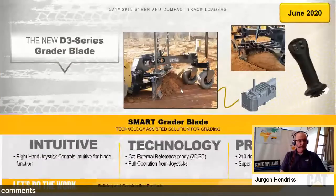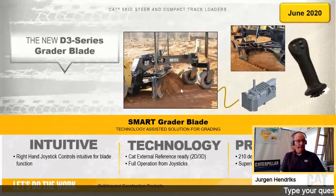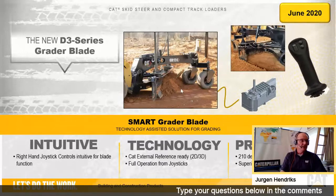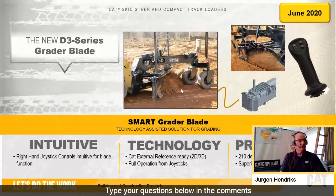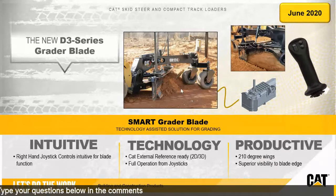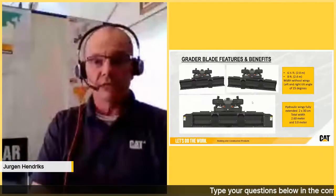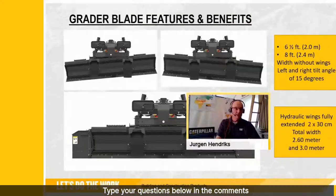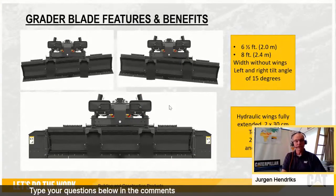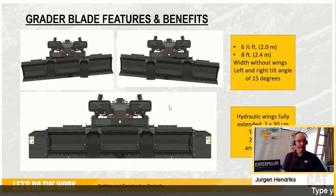Another example of a smart attachment is the new grader blade, which becomes available in AIME in June 2020 and was recently launched at Conexpo in the USA. This is a new smart attachment based on our box blade with further development so it can angle. It features a two-meter-wide blade or a two-meter-forty blade, both available with or without wings. Adding the wings gives a two-meter-sixty or three-meter-wide grader.